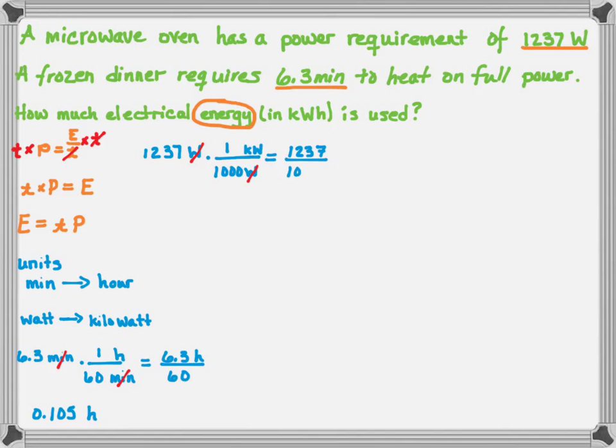To convert from watts to kilowatts, I do the following. I know one kilowatt equals a thousand watts, so I end up dividing by a thousand. 1237 divided by a thousand gives me 1.237 kilowatts.